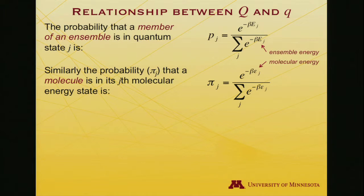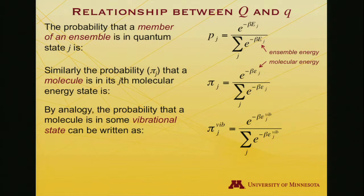The difference then would be an ensemble energy versus a molecular energy. Now, by analogy, the probability that a molecule is in some vibrational state, because there are many contributors to a molecule's energy. So we can talk about the probability with a superscript for the particular kind of energy level, vibration here. That'll be e to the minus beta, and all I'm doing is calling out that this energy is associated with a particular component of molecular energy.